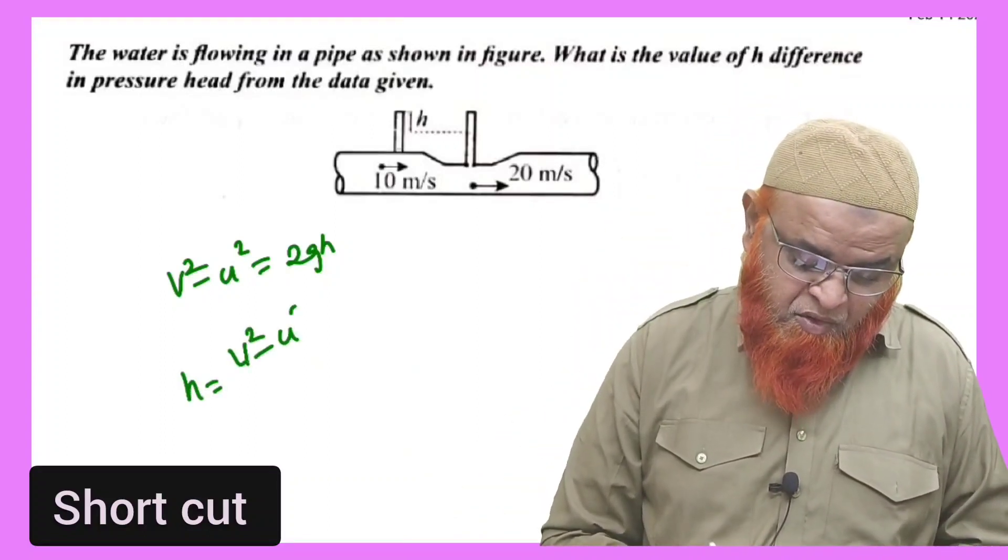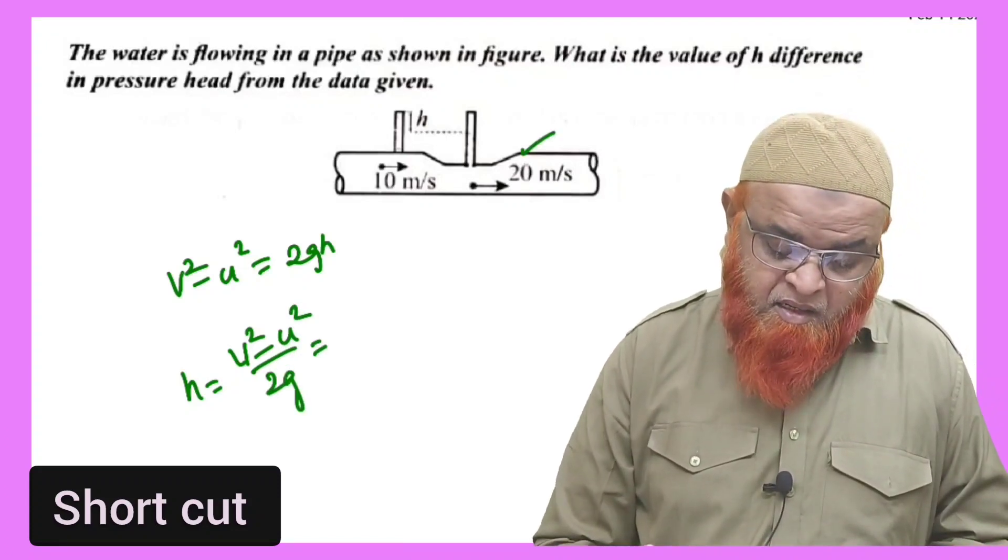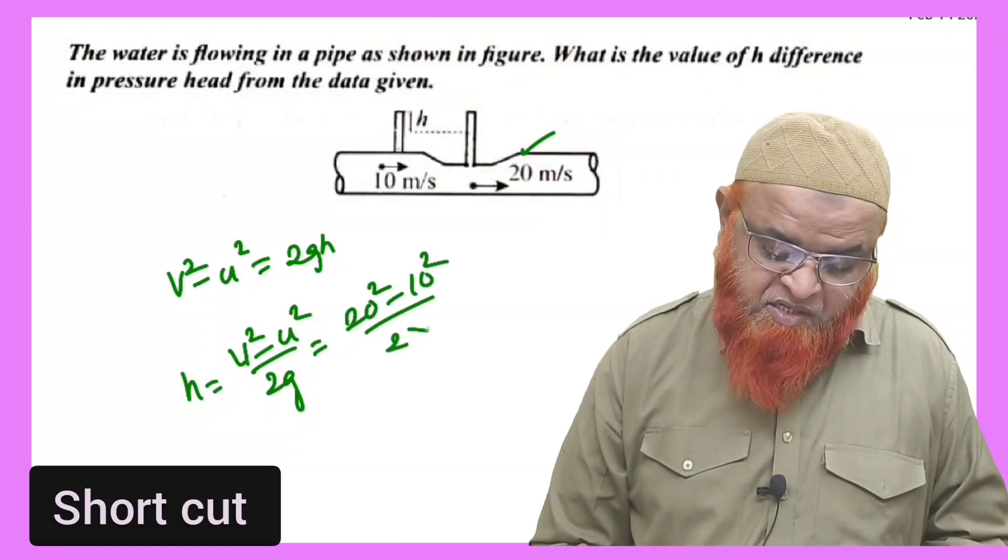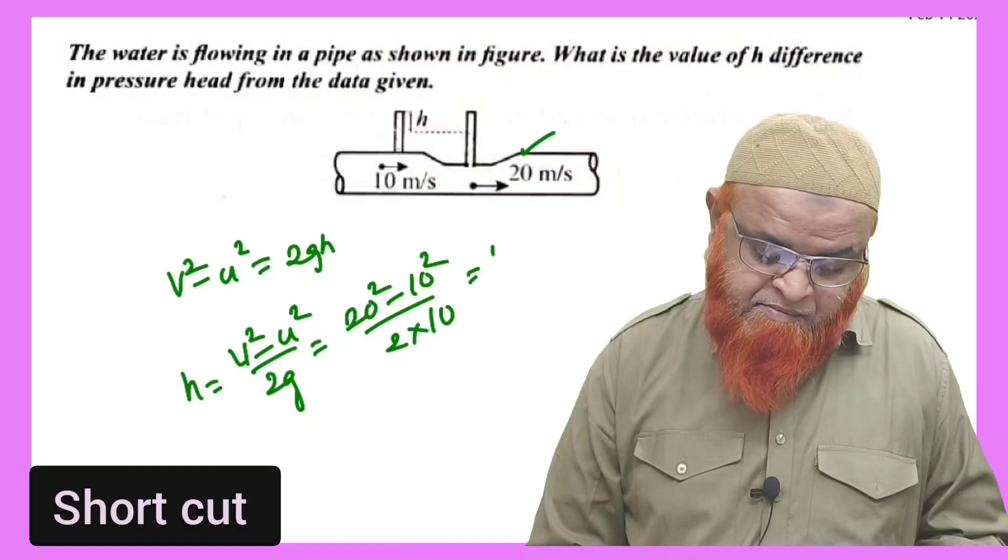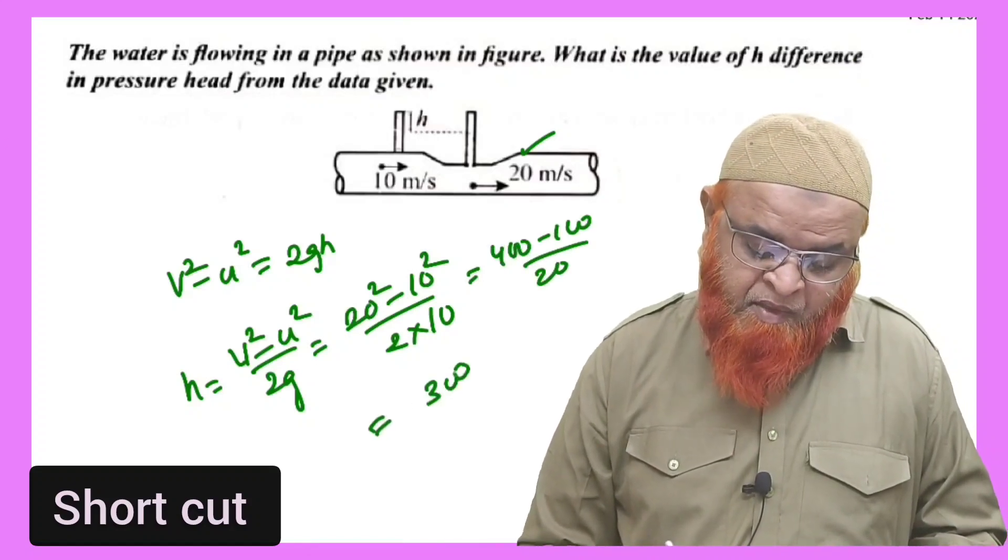So h = (v² - u²)/(2g). Here v is 20, so: 20² - 10² by 2 into 10. This is 400 - 100 by 20, which